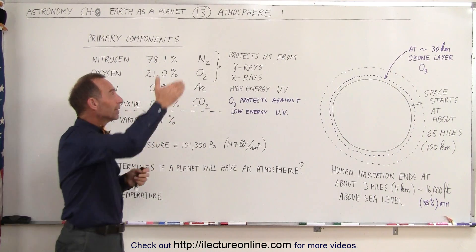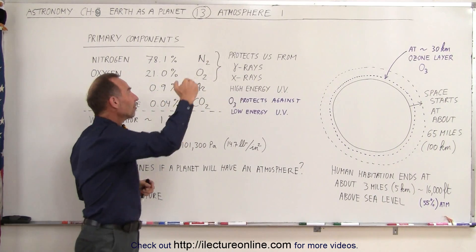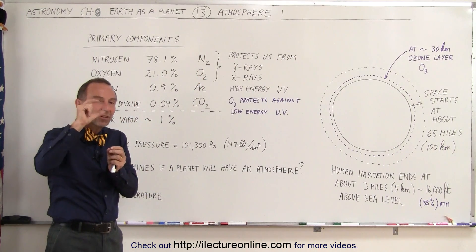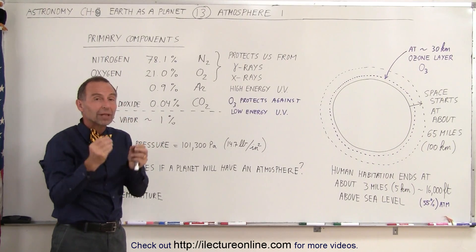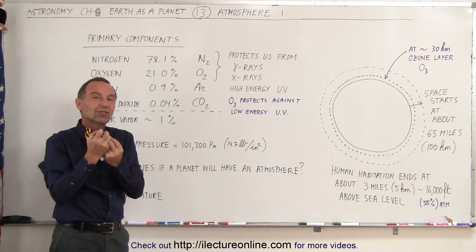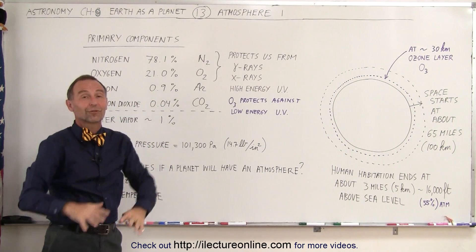When gamma rays, X-rays, and high-energy UV radiation enter our atmosphere, they bounce up against these nitrogen-oxygen molecules, and the energy contained in the photons of UV, X-rays, and gamma ray radiation will actually break the bonds in the molecules, and thus the energy is absorbed.